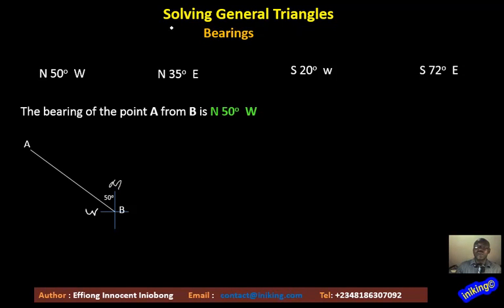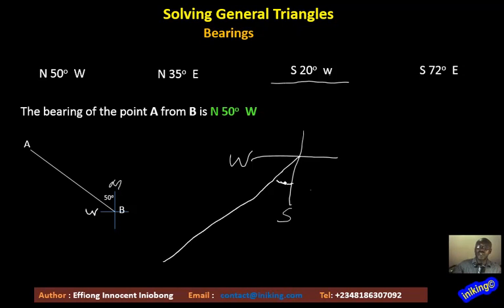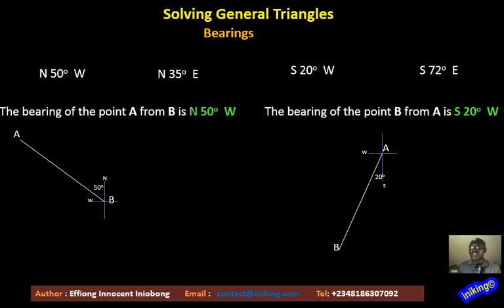Next we look at S 20° W — 20 degrees west of south. This is south and that's west, so it means we are going to the left about 20 degrees. We know the full quadrant is 90 degrees, so we take a small angle. That line is the direction we're looking for. The bearing of B from A is S 20° W, that's 20 degrees west of south.